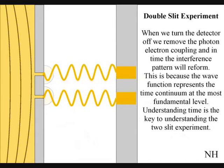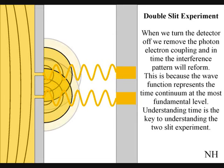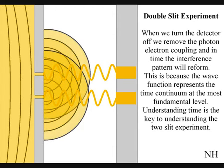If the observer turns off the electronic detector, the interference pattern will reform over a period of time, photon by photon.